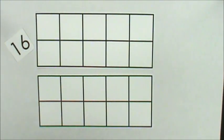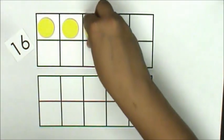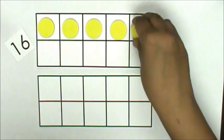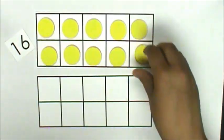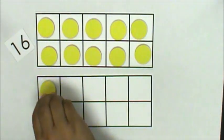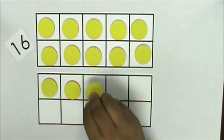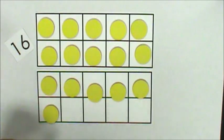Next I represent the number on my double ten frame. I should not be counting as I'm doing this because I know that when it's full, that's 10. The top row when it's full is 5, so that's 15, and 1 more is 16.